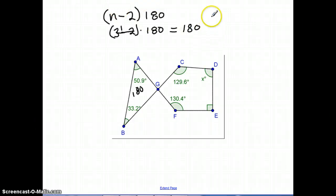I'd do the same thing for my pentagon, which is the other shape here. 5 minus 2 times 180, we get 3 times 180, and I end up knowing that it is 540 degrees total.